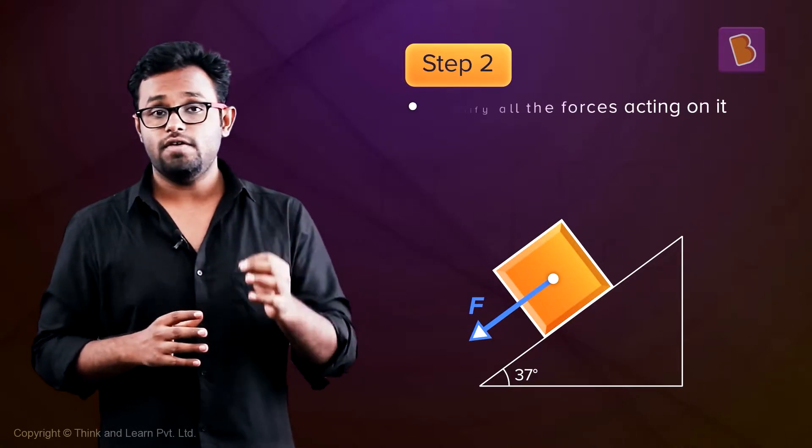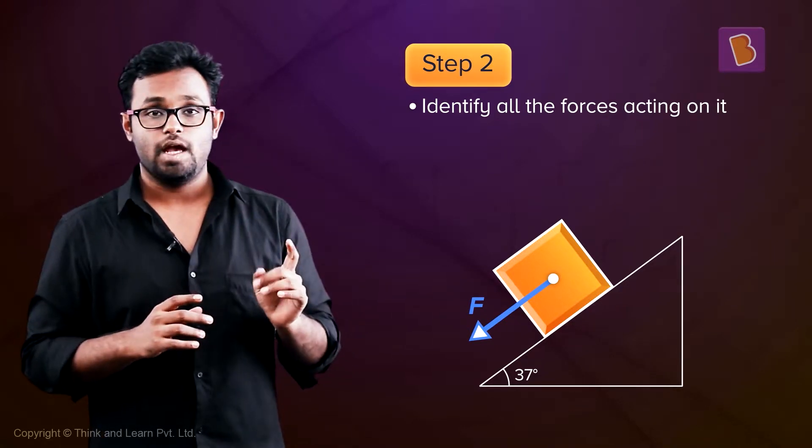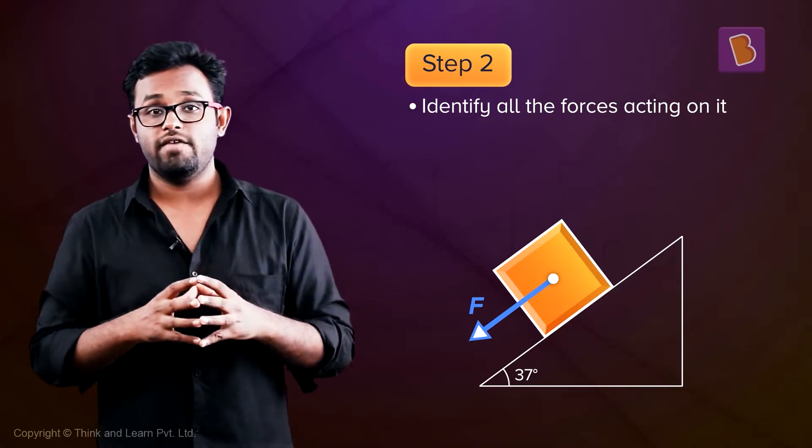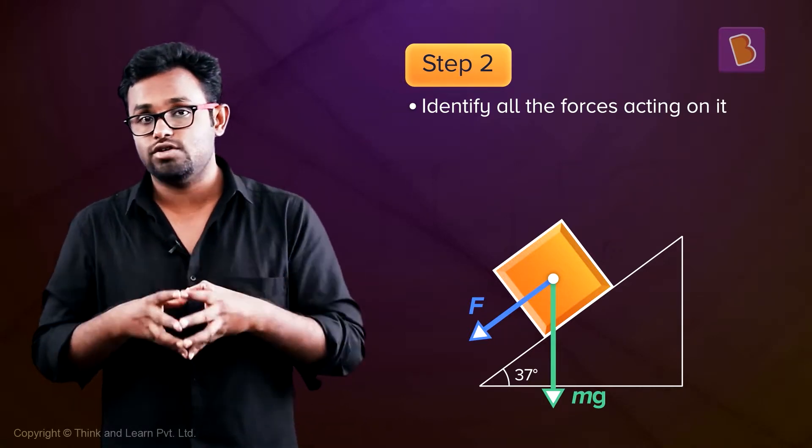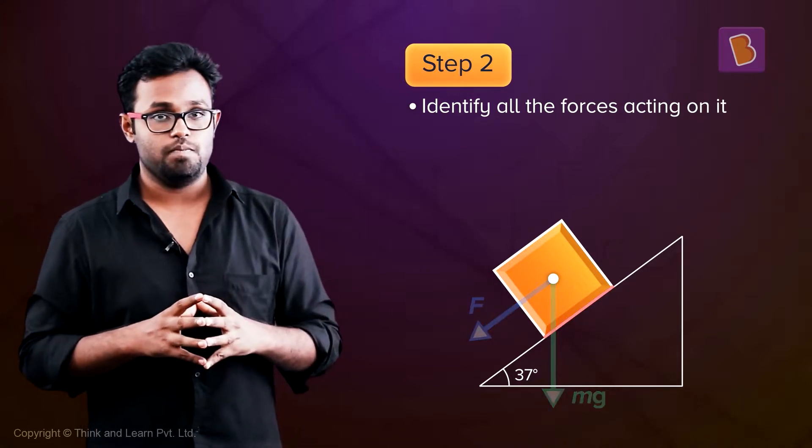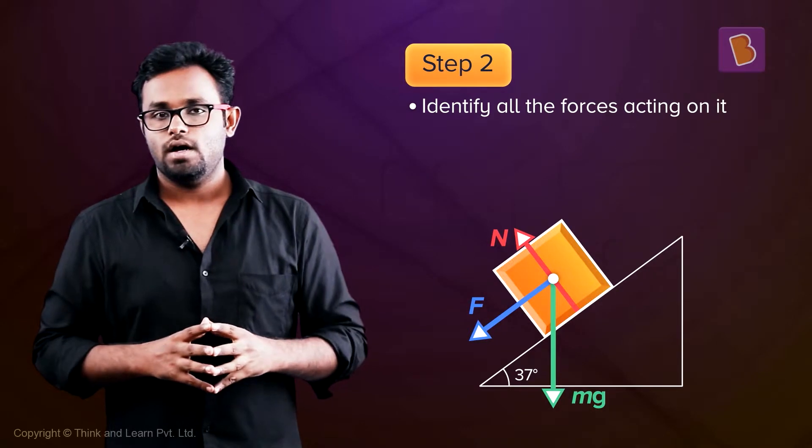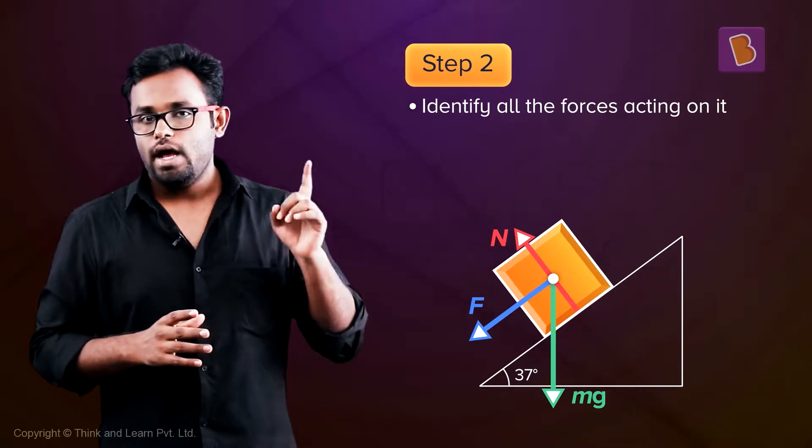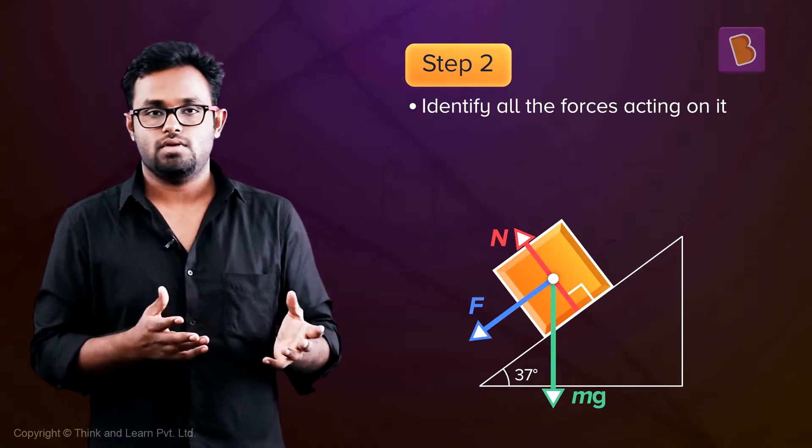Step 2: Identify the forces acting on it. Here, along with the given force, we have mg acting downwards. By the way, mg always acts downwards, you know that, right? Now, there is a contact of our system with the incline, so there will be a contact force, the normal reaction. And the normal reaction acts normal to the system, obviously.